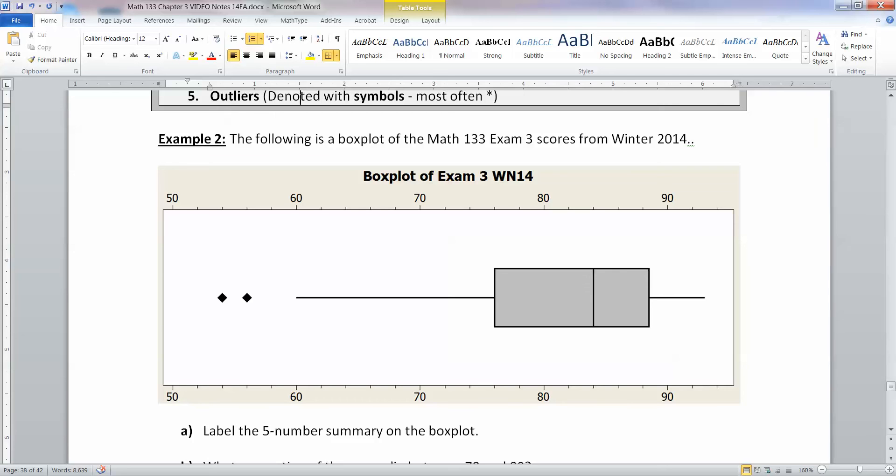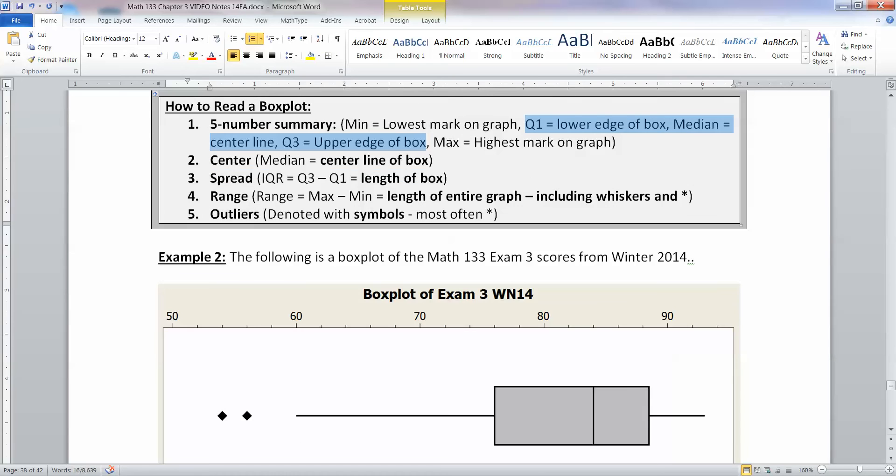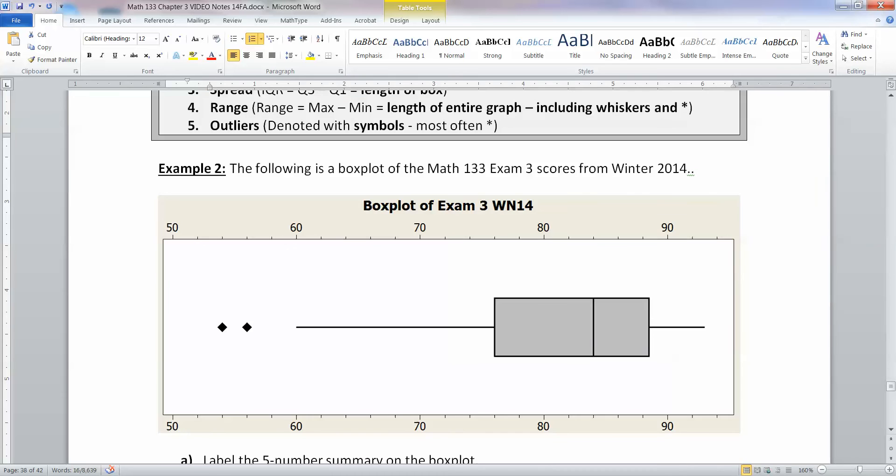So here you have a box plot of our exam data. You can see in the middle, you have your box. You have a box that goes from Q1, which is the lower edge of the box, all the way up to Q3, which is the upper edge of the box. And then there's a line in the middle, and that's the median. So here's the median at 84. Here's the Q3 at 88.5. And here's Q1 at 76 over on the left. So these three numbers are represented by that box.